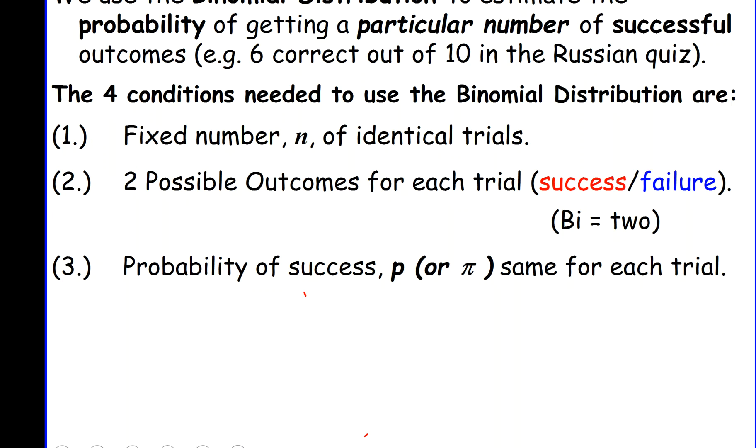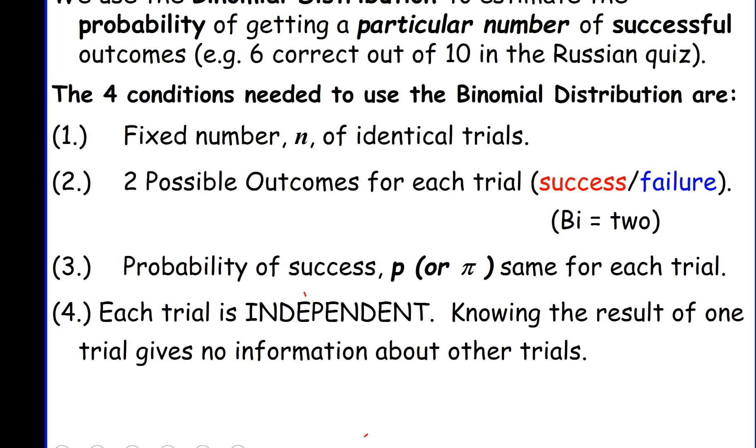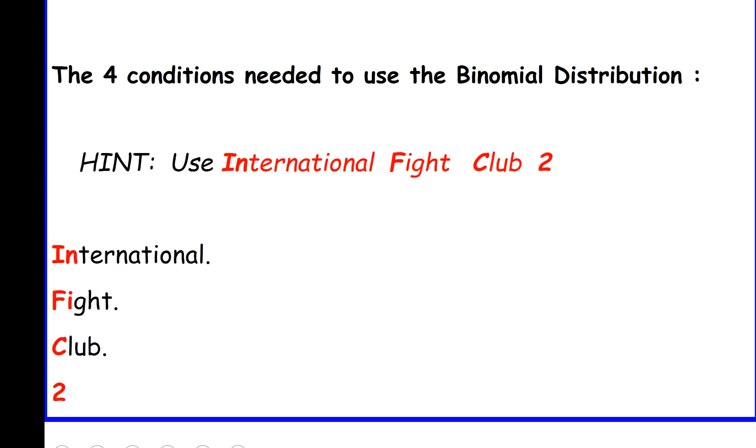One is regarded as success and the other regarded as failure. Probability of success needs to be the same for each trial. And each trial needs to be independent. In other words, knowing the result of one trial must give no information about the other trials.